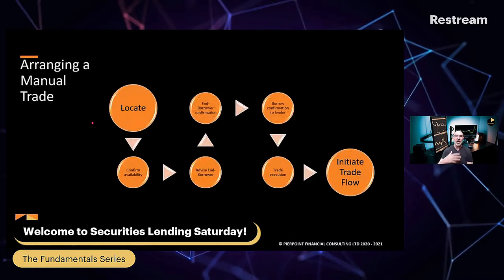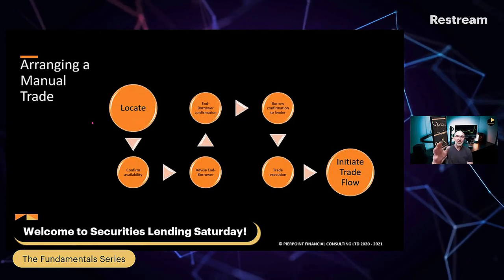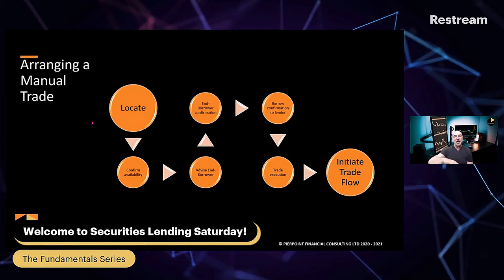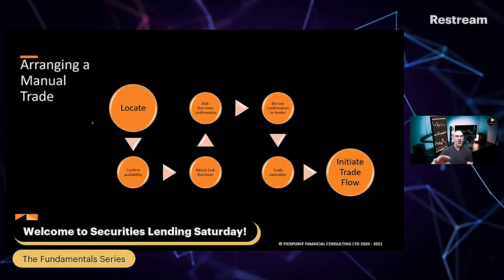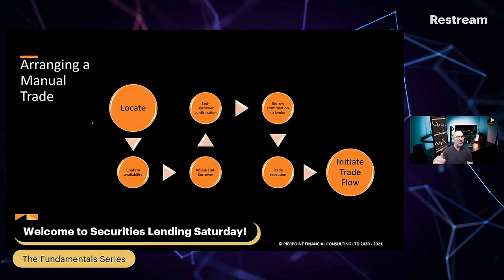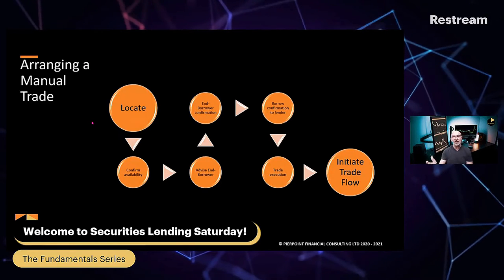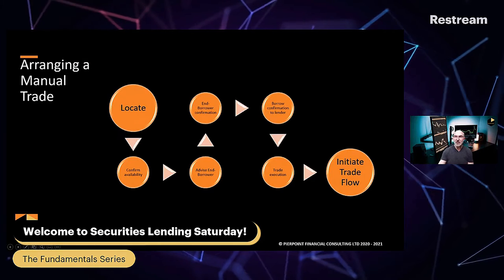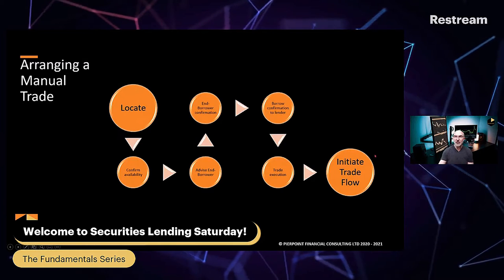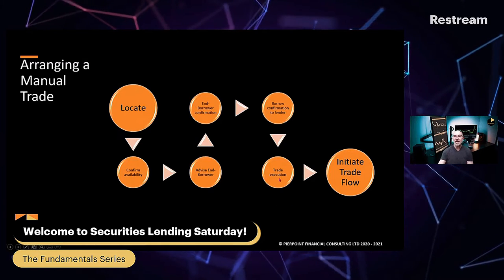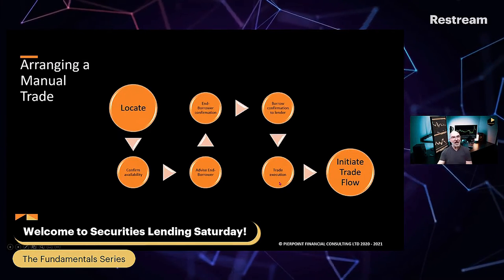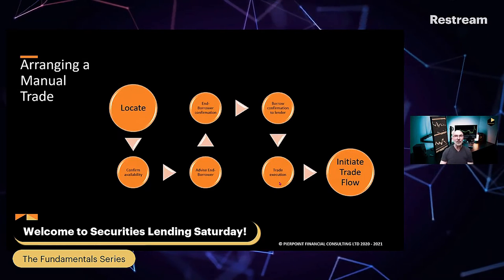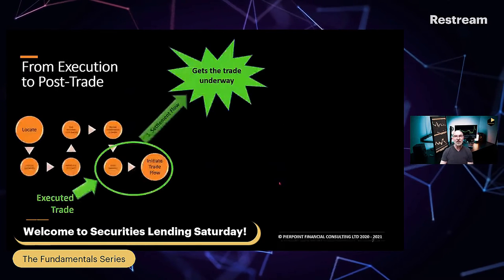In the next slide, again this is what we talked about last week, so I won't go into it. You go all the way from the locate process through confirmation that there's a willingness and ability to execute a trade, through to the trade execution itself — executing a trade, and then that initiates the trade flow.